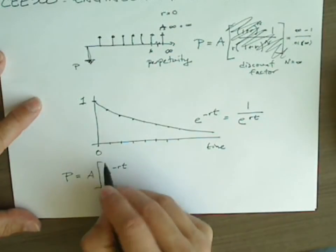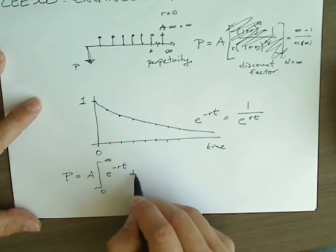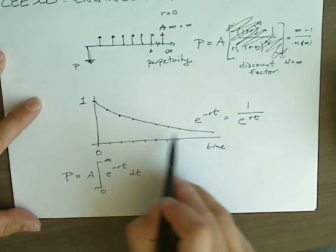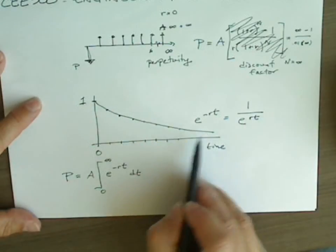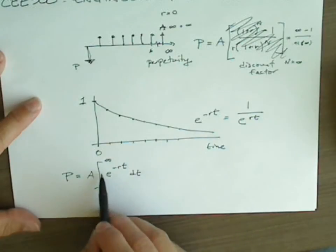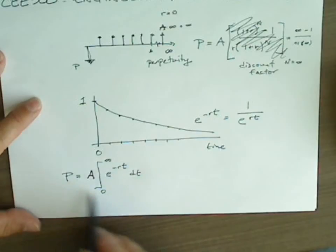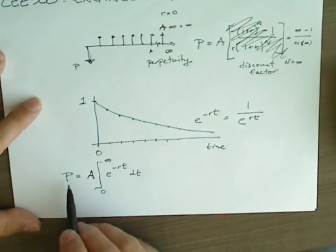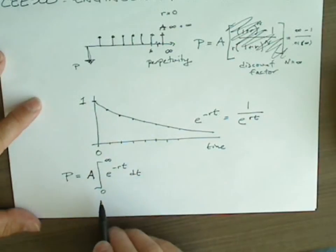But if we want to add them all up in a single expression, then we can use calculus. We're going to integrate this function, the discount factor function, from 0 to infinity, multiply that by A, and thus, in one expression, we should be able to calculate P, the equivalent present value.